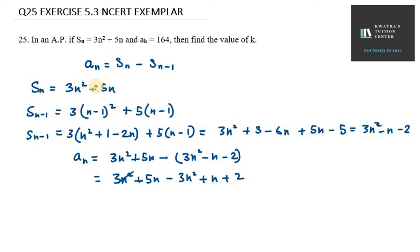So 3n squared and 3n squared get cancelled out. This is my An value. Now we will put this equivalent to Ak.